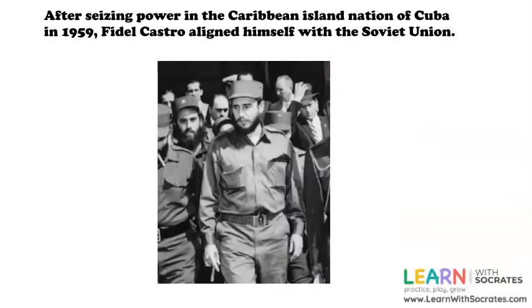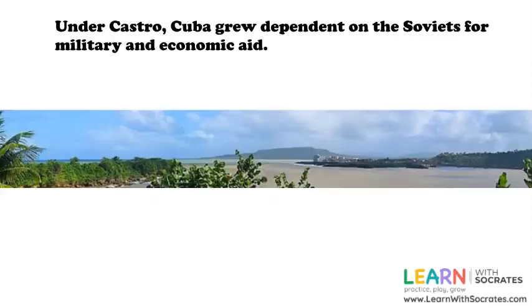After seizing power in the Caribbean island nation of Cuba in 1959, Fidel Castro aligned himself with the Soviet Union. Under Castro, Cuba grew dependent on the Soviets for military and economic aid.